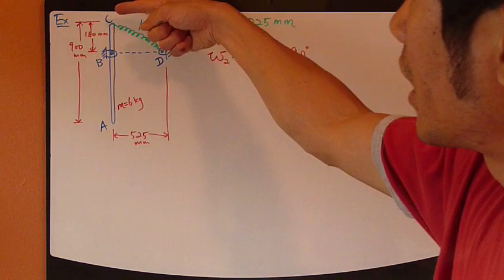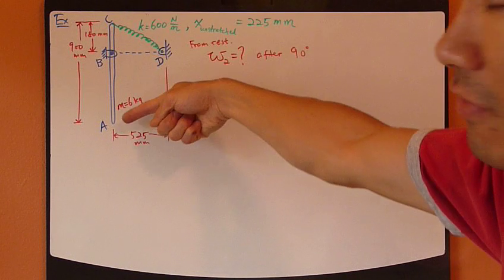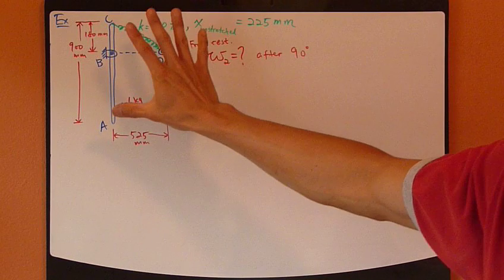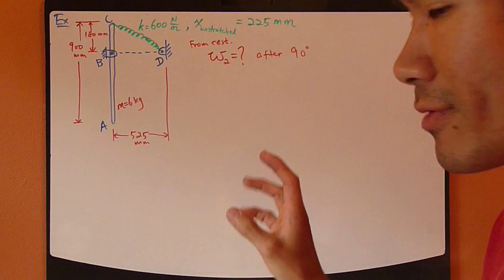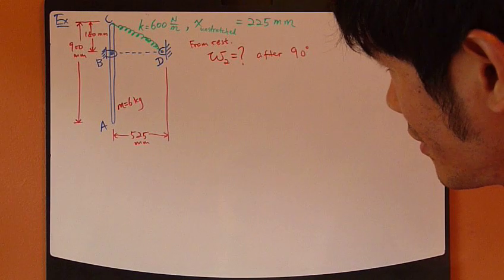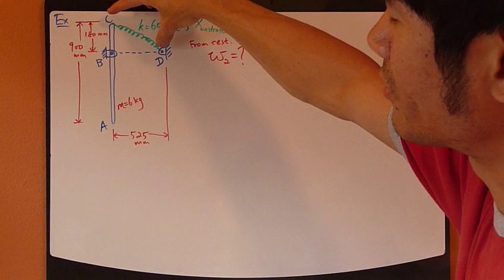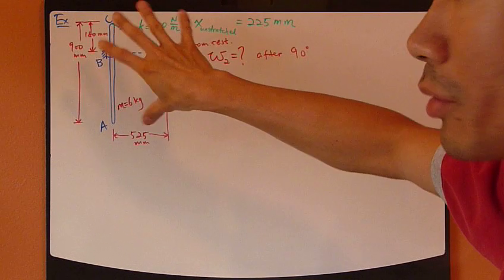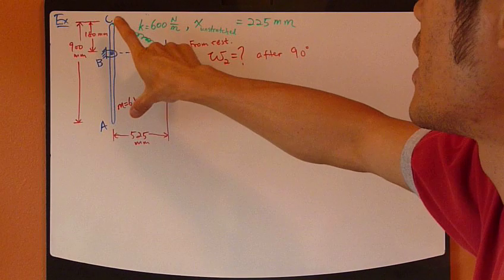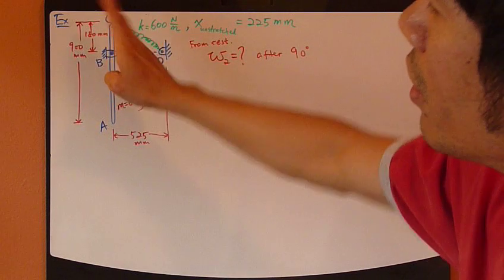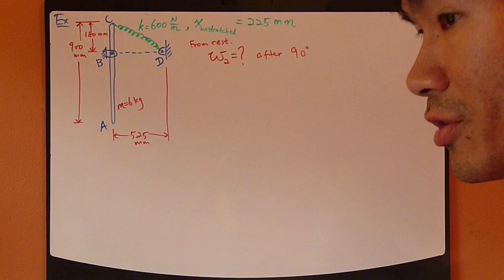Initially this rod is in a vertical position and it's not moving. Then we release it, so something's going to happen with this spring — it's going to cause a motion, a rotation. Whether it's going to rotate clockwise or counterclockwise, we don't know. We need to figure it out.